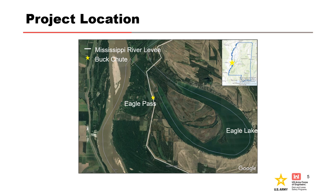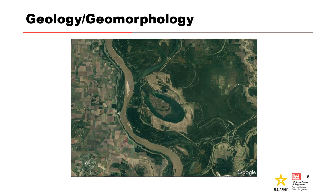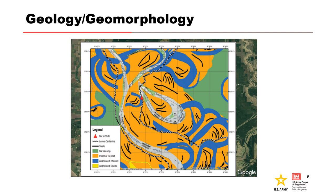A chute is a surface water flow path that typically allows flood water to traverse a low section of land. In this case, Buck Chute is a backwater channel that connected Eagle Pass to Eagle Lake prior to construction of the main stem levee. Buck Chute is located in the Yazoo Basin within the lower Mississippi River Valley, which is characterized by both braided and meandering alluvial deposits. Braided deposits were laid down during the Quaternary Period, with the last 10,000 years corresponding to the Holocene Period, marked by a low gradient meandering Mississippi River system. This meandering system is characterized by oxbow lakes, as well as point bar, swale, abandoned channel, abandoned course, and back swamp deposits.